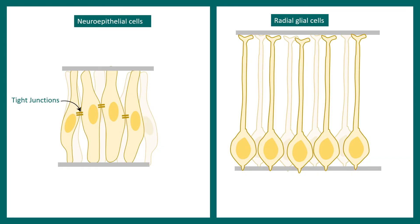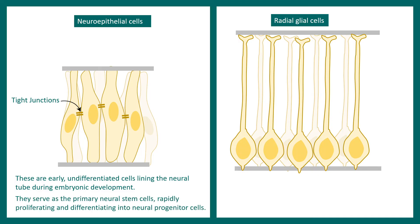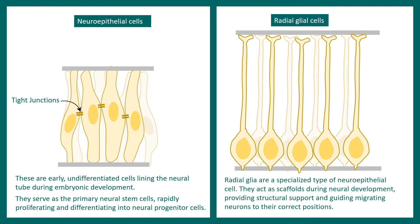Neuroepithelial cells are the precursors for radial glia. Eventually neuroepithelial cells would change their shape, size, and adhesion properties and become radial glial cells. These neuroepithelial cells and radial glial cells look quite different, as the picture shows. The neuroepithelial cells are undifferentiated and line the entire neural tube — they are stem cells in nature. Whereas radial glial cells are one type of specialized neuroepithelial cell; they also have stem cell-like properties but can divide either symmetrically or asymmetrically.